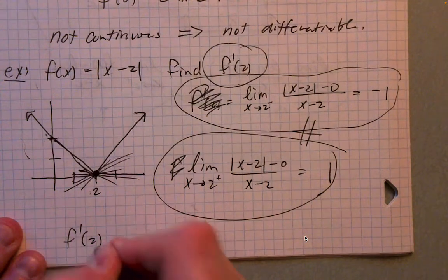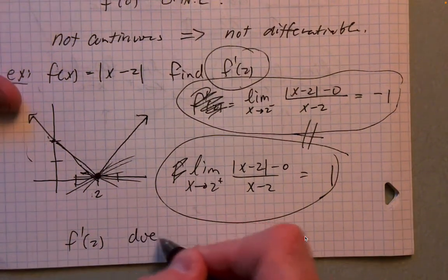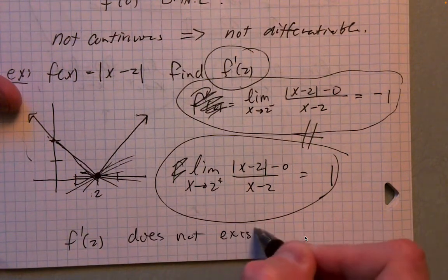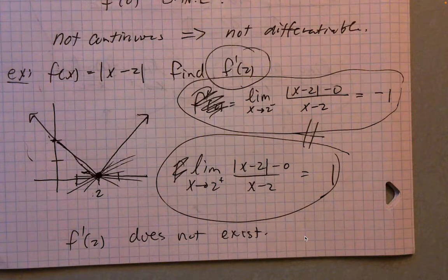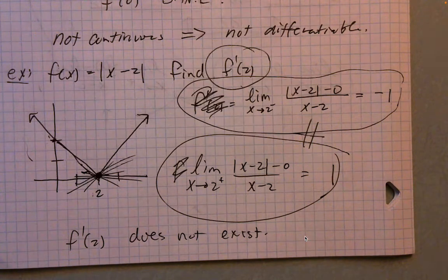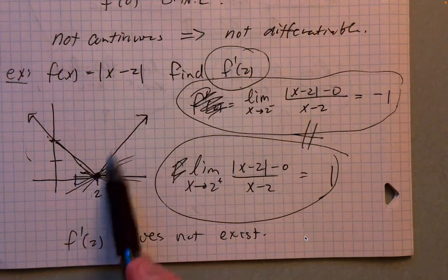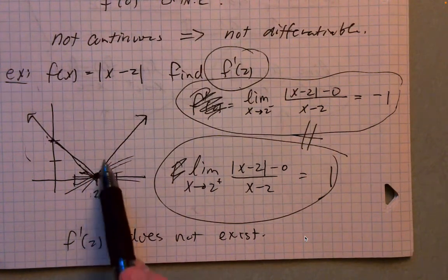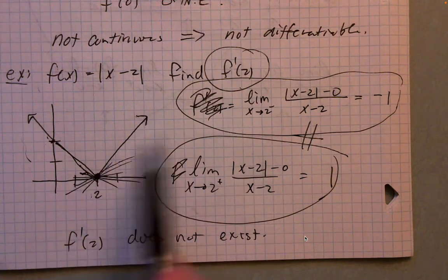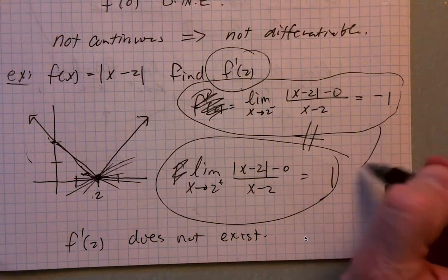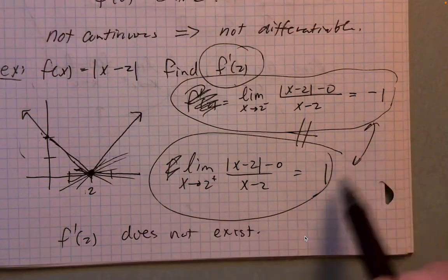Even though this function is perfectly continuous — no gaps, no hole in the domain, no non-removable discontinuity, no asymptote — the idea of a tangent line at this corner point is simply not workable. There's no way a unique tangent line could exist at this point, and it bears out when you try to actually calculate the derivative.